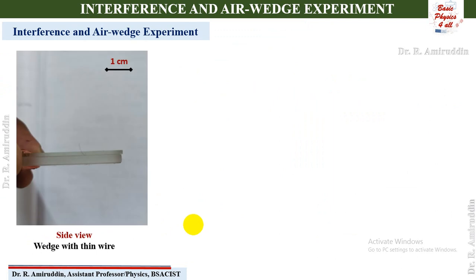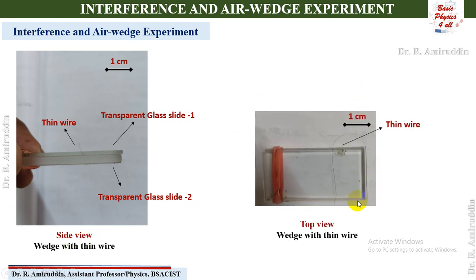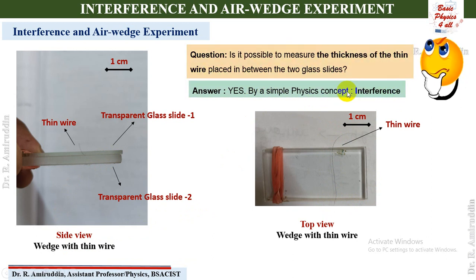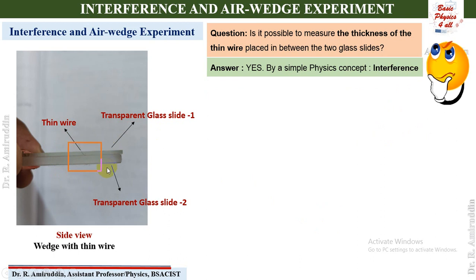Based on the understanding of interference, let us perform the air wedge experiment. We consider a thin wire placed between glass plate one and glass plate two. This is the side view and the top view of the wedge with the thin wire. The question is: can we measure the thickness of a thin transparent wire placed between two glass plates? It cannot be seen with the naked eye, but it is possible using the interference concept. Let us zoom in and analyze the schematic representation of this setup.